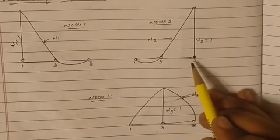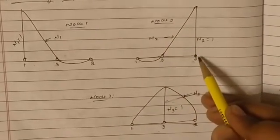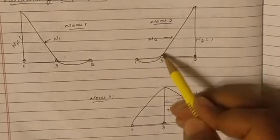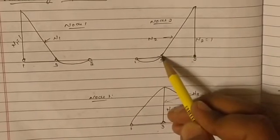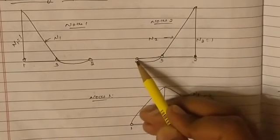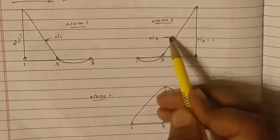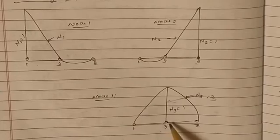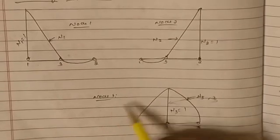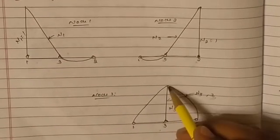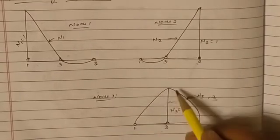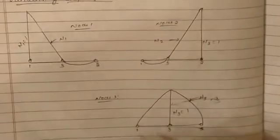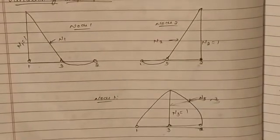Similarly, for node 2, N2 is maximum (equals 1) at node 2 and drops to 0 at nodes 1 and 3 — draw a smooth curve. For node 3, N3 is maximum (equals 1) at node 3 and drops down to 0 at the other nodes. This is how the shape function variation is plotted for the 3-noded bar element, or quadratic bar element.